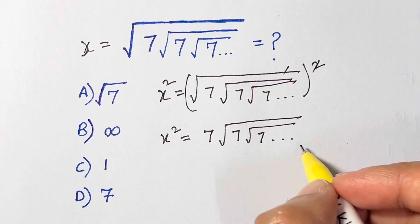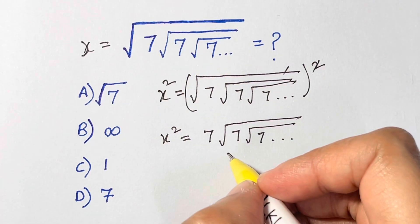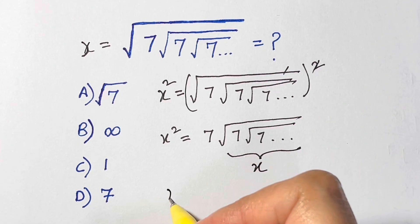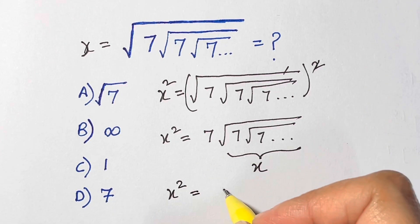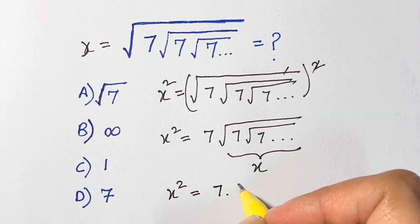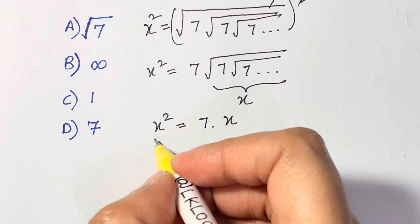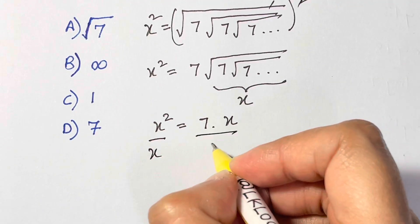So we are going to substitute x in place of this, so we have x square is equal to 7 times x. Now just divide both sides by x to eliminate this x.